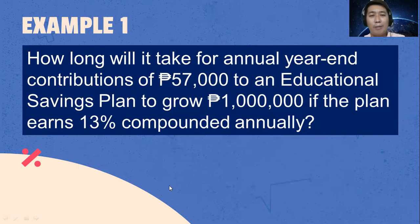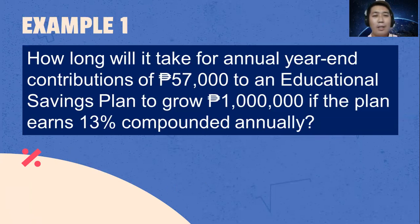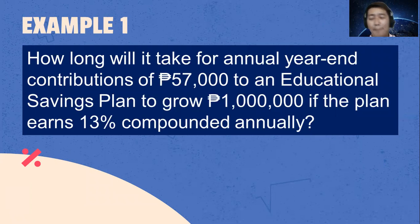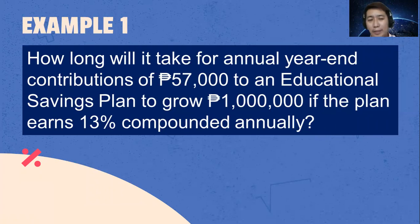Let's now try to solve the first given problem. How long will it take for annual year-end contributions of 57,000 to an educational savings plan to grow to 1 million pesos if the plan earns 13% compounded annually?